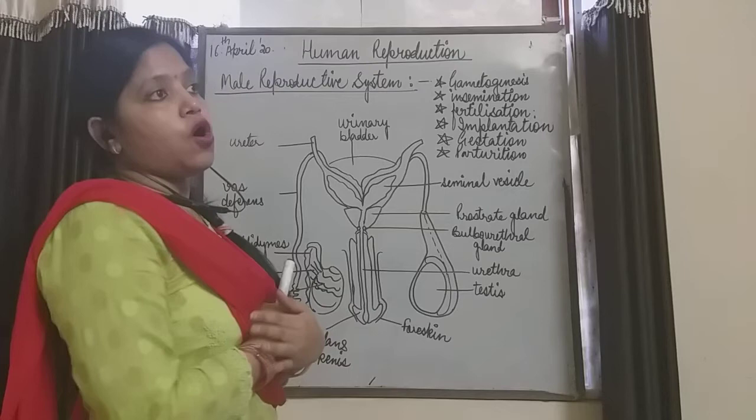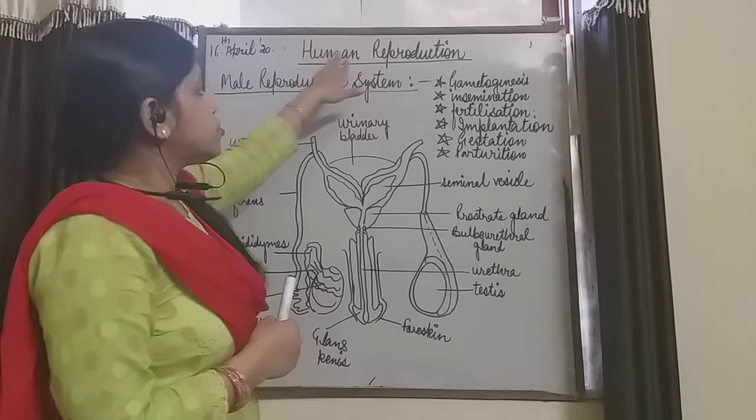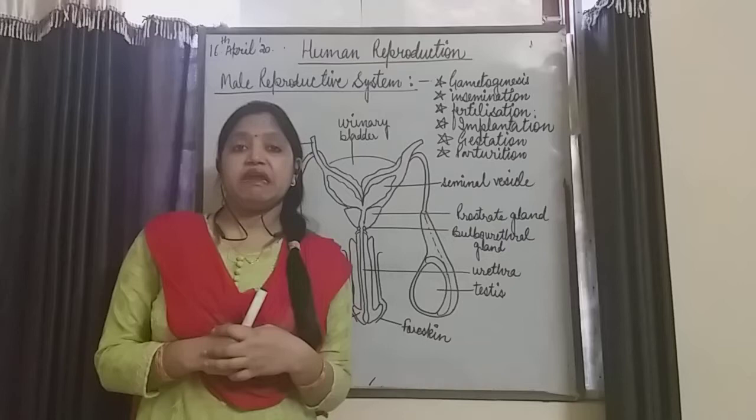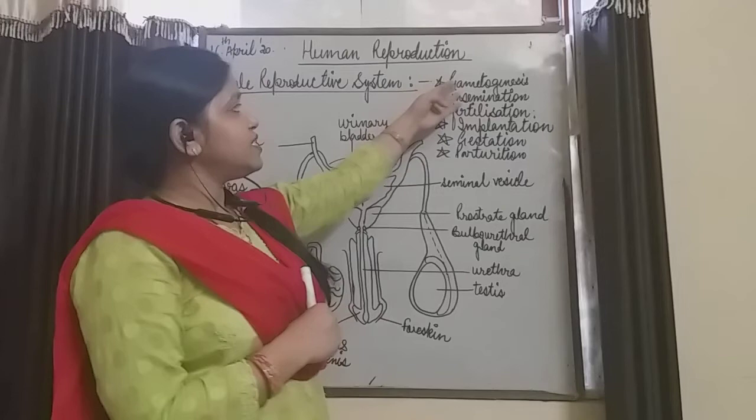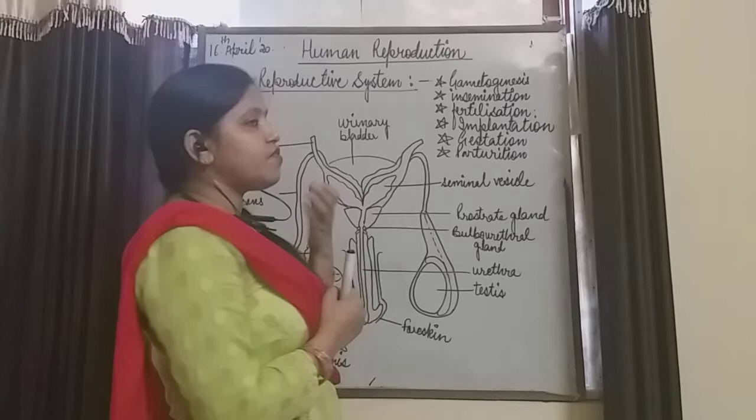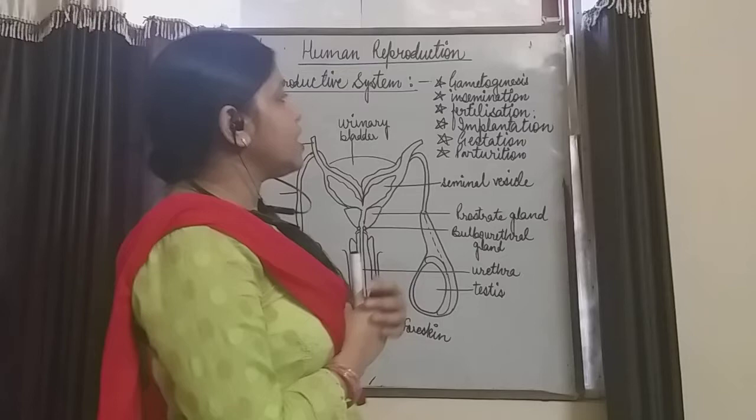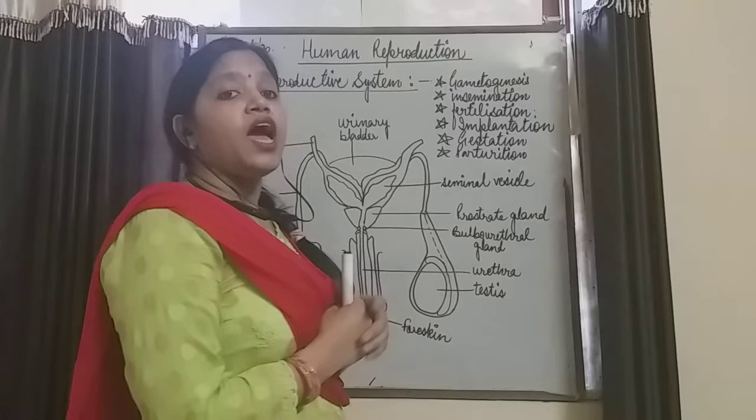In this chapter we will study how the male and female gamete formation takes place, that is known as gametogenesis. You all know very well the formation of male and female gametes. The male gamete is sperm. So we will study the formation of sperm and the formation of ova.